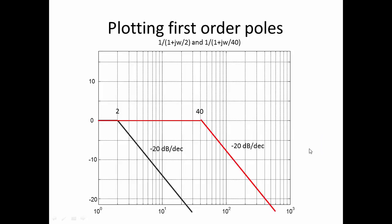When I now want to plot the first order poles, the black curve corresponds to the pole at 2 radians per second, and the red curve corresponds to the pole at 40 radians per second. Each of them roll off at minus 20 dB per decade.